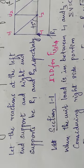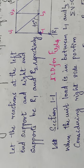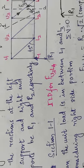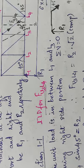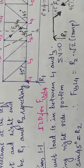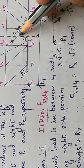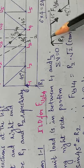Let the reactions at the left-hand and right-hand supports be R1 and R2 respectively. Let us first calculate for u3l4, which is the inclined member. For this inclined member, I have drawn the free body diagram.